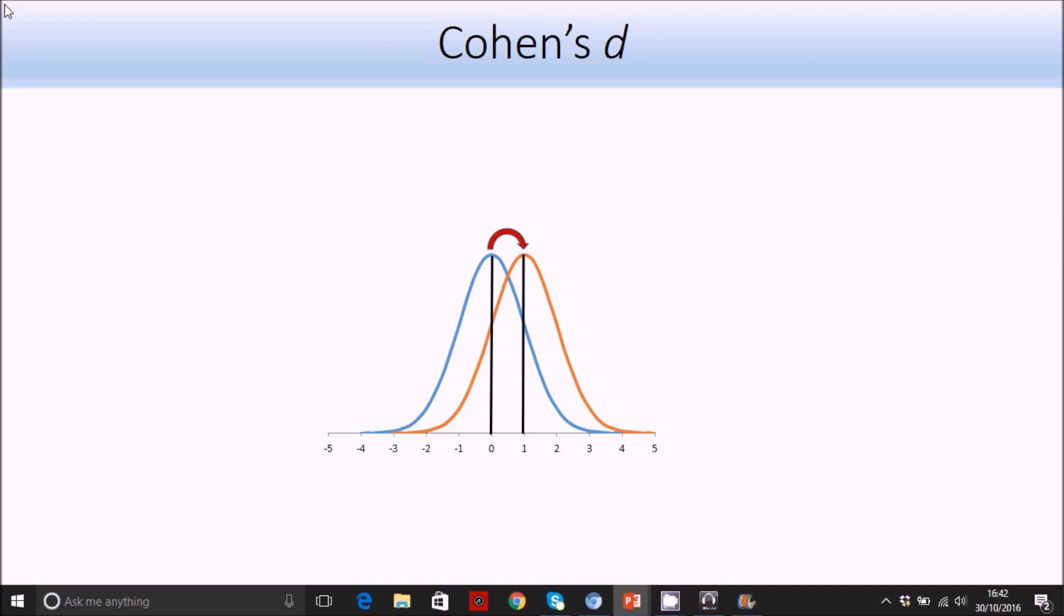If your Cohen's D was exactly one, it would mean that the group differences are a magnitude of one standard deviation. If it was 0.5, it means the group differences represent half a standard deviation. And you can just interpret Cohen's D in that way.